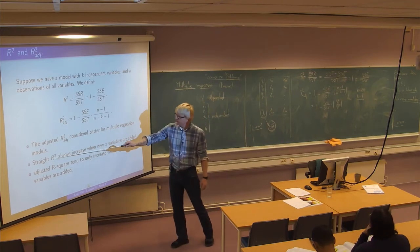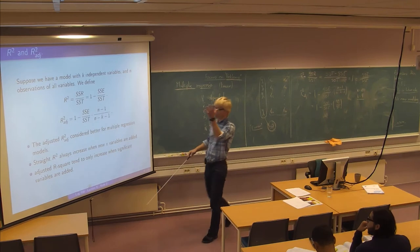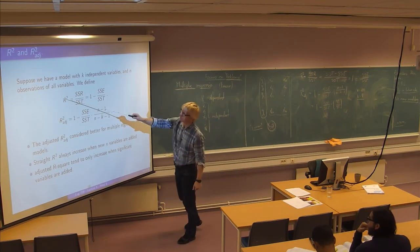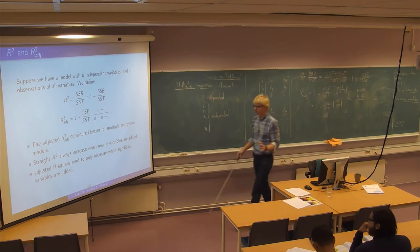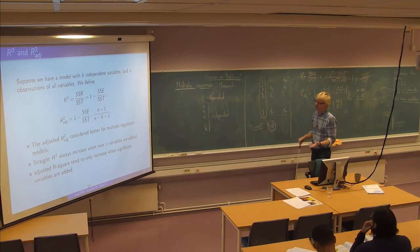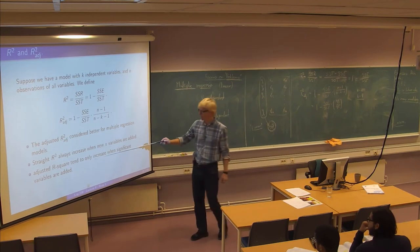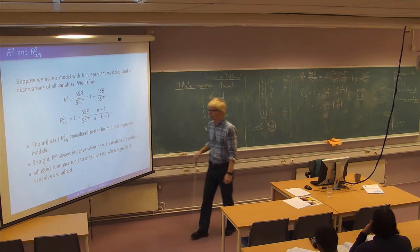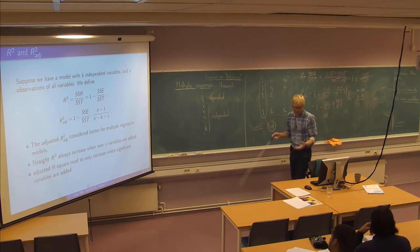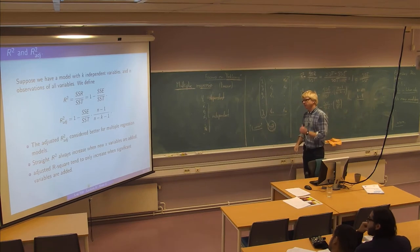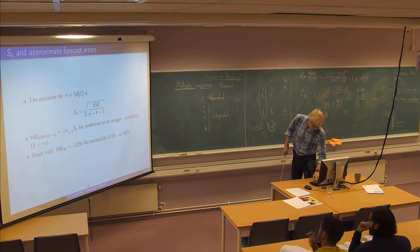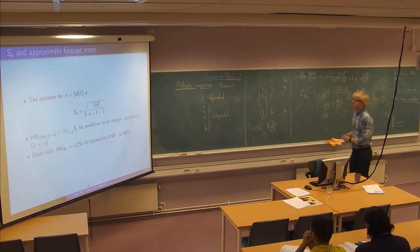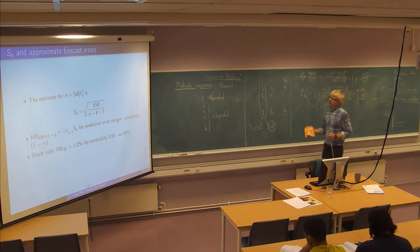So we are subtracting a little bit more from this 1 here just to sort of pay the price of having a larger number of X variables. So these are usually not very different. But I mean, in theory this one is considered a slightly better choice. So the problem with the straight R square you can say is that whatever garbage you throw into your model, the straight R square will always increase a little bit. Whereas, this one tend to only increase when you throw in some additional significant variable to the model.